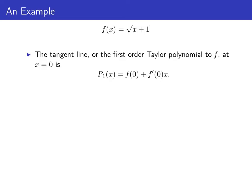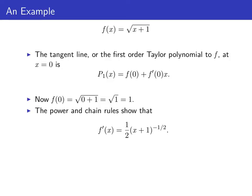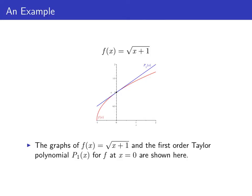The first order Taylor polynomial to f at x = 0 is f(0) + f'(0) times x. Now, f(0) is the square root of zero plus one, which is just one. The power and chain rules show that f'(x) is one half times (x+1) to the minus one half. So f'(0) is one half. This makes p₁(x) equal to one plus one half x. Here's a graph of our function f in red along with our Taylor polynomial in blue — this is just the tangent line to f at zero. You can see that as long as x is fairly close to zero, the tangent line is a pretty good approximation to the graph of f.